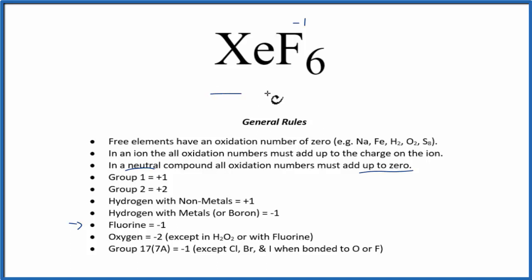We don't know what Xe is, but we do know fluorine has a minus one and there are six fluorines. And all of that has to add up to zero because this is a neutral compound. So something plus minus six equals zero.